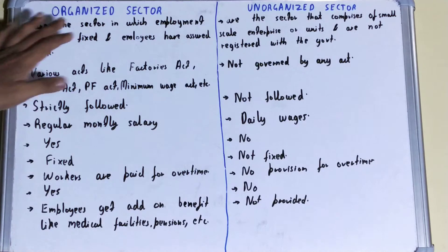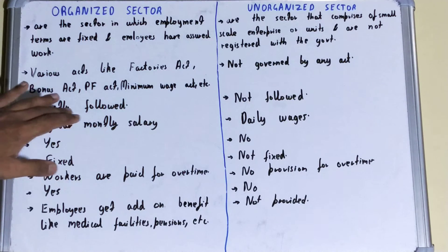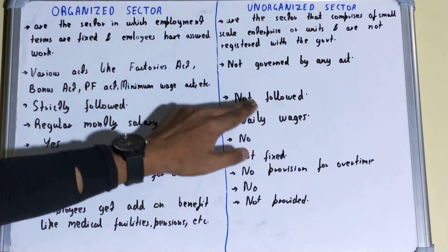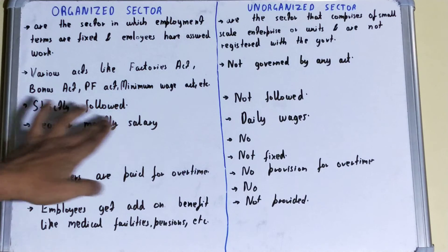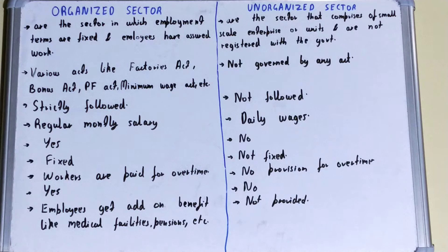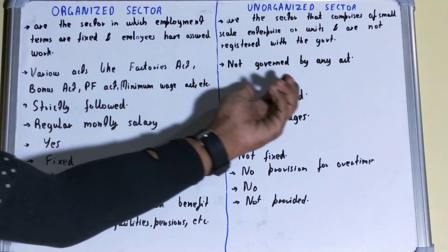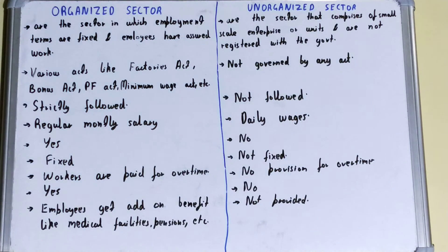In the case of the organized sector, the rules are strictly followed, but in the unorganized sector the rules are not followed. If we talk about daily wages or salaries, in the case of the organized sector a regular monthly salary is provided to the worker at the end of the month, but in the case of the unorganized sector, daily wages are given.